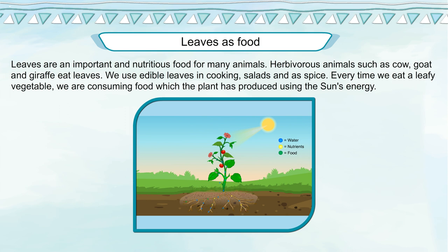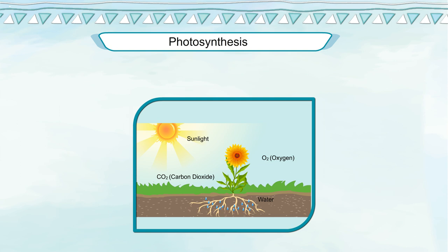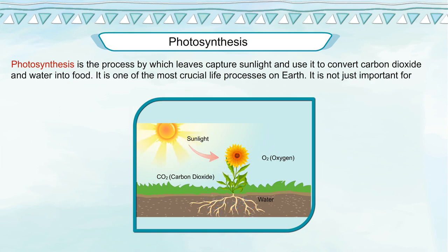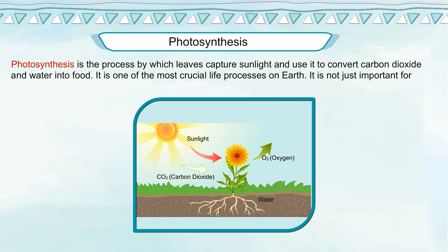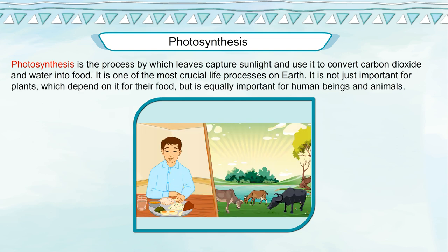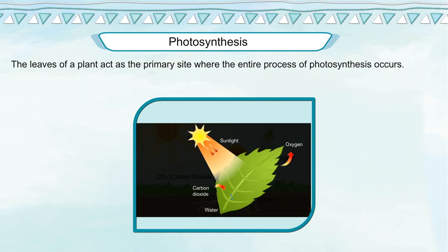Every time we eat a leafy vegetable, we are consuming food which the plant has produced using the sun's energy. Photosynthesis is the process by which leaves capture sunlight and use it to convert carbon dioxide and water into food. It is one of the most crucial life processes on earth — not just important for plants, but equally important for human beings and animals. The leaves of a plant act as the primary site where the entire process of photosynthesis occurs.